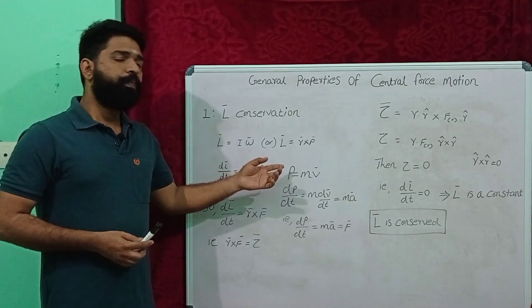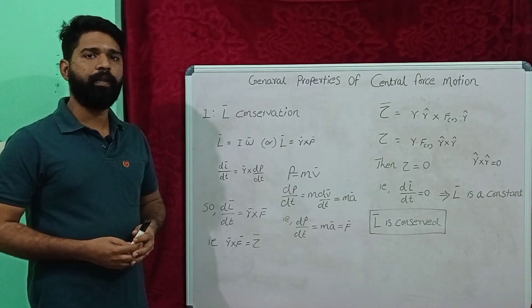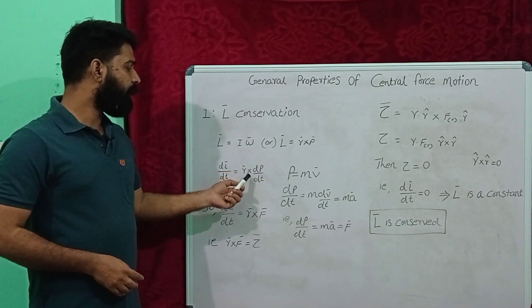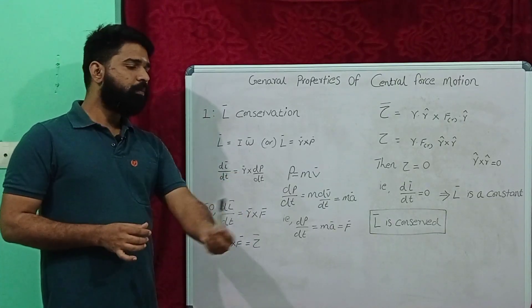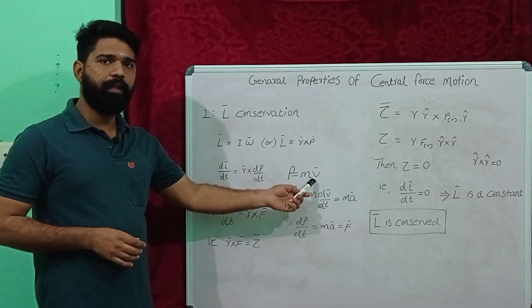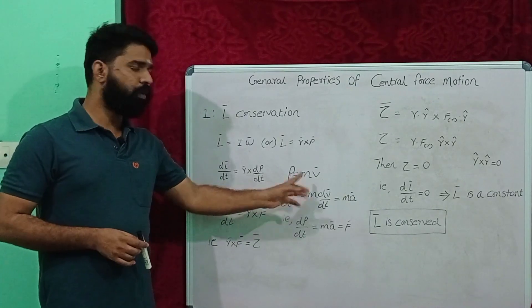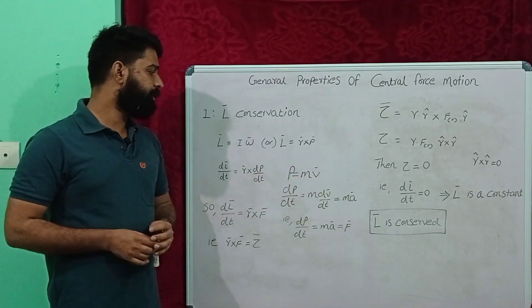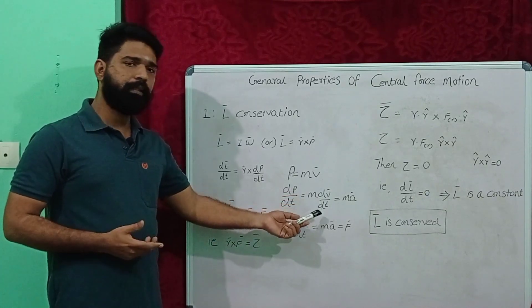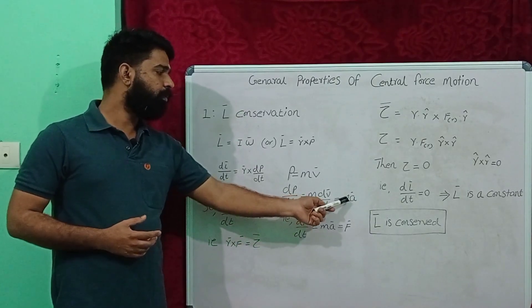If we differentiate the angular momentum with respect to time, we can rewrite this equation as dL/dt equal to R cross dP/dt. Because the object is moving in circular motion, there is only one variable, which is velocity. Since linear momentum equals mass times velocity, and mass is always constant, dP/dt equals m times dV/dt. And dV/dt means acceleration — the rate of change of velocity — so dP/dt is equal to mass times acceleration.